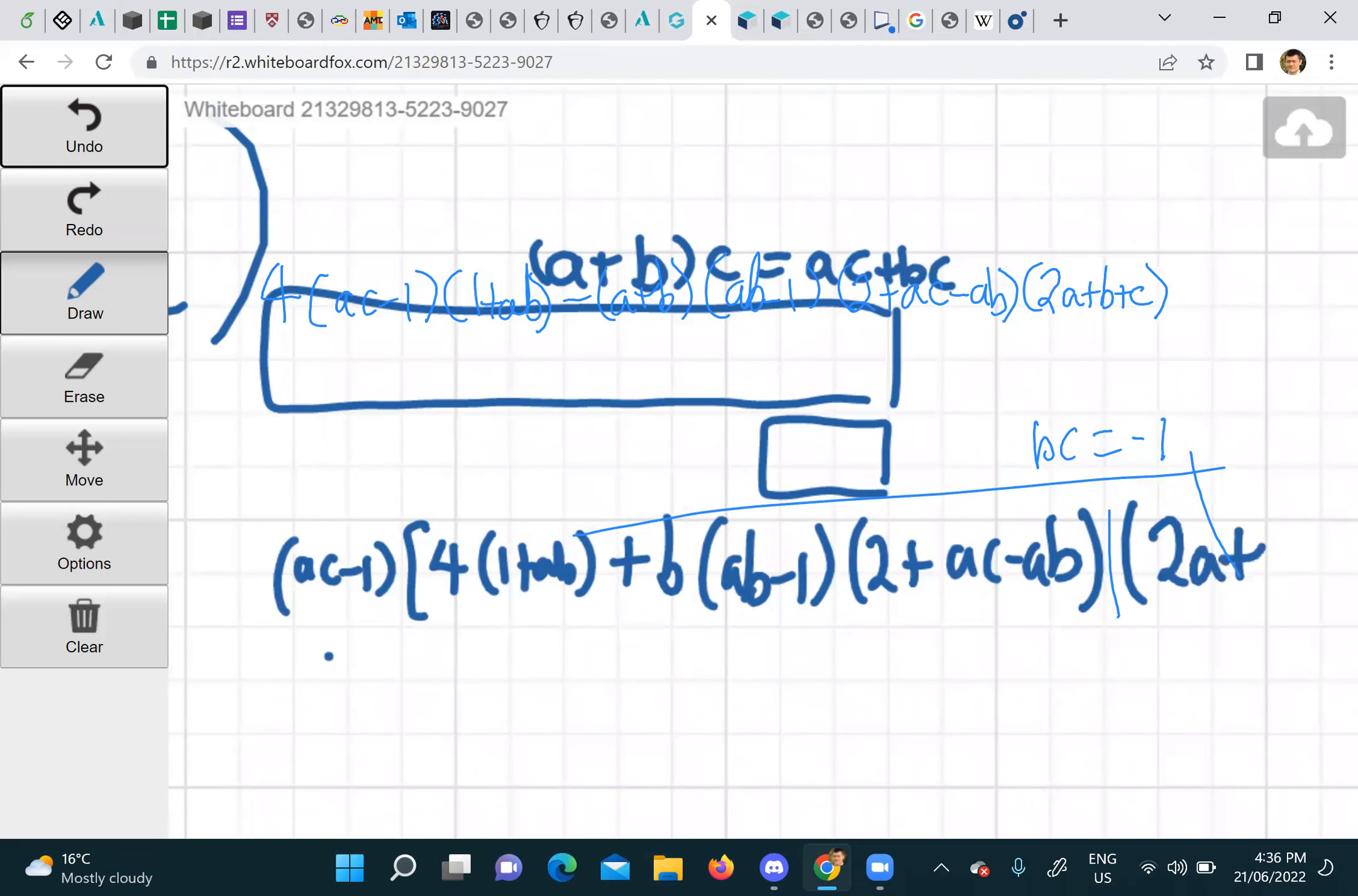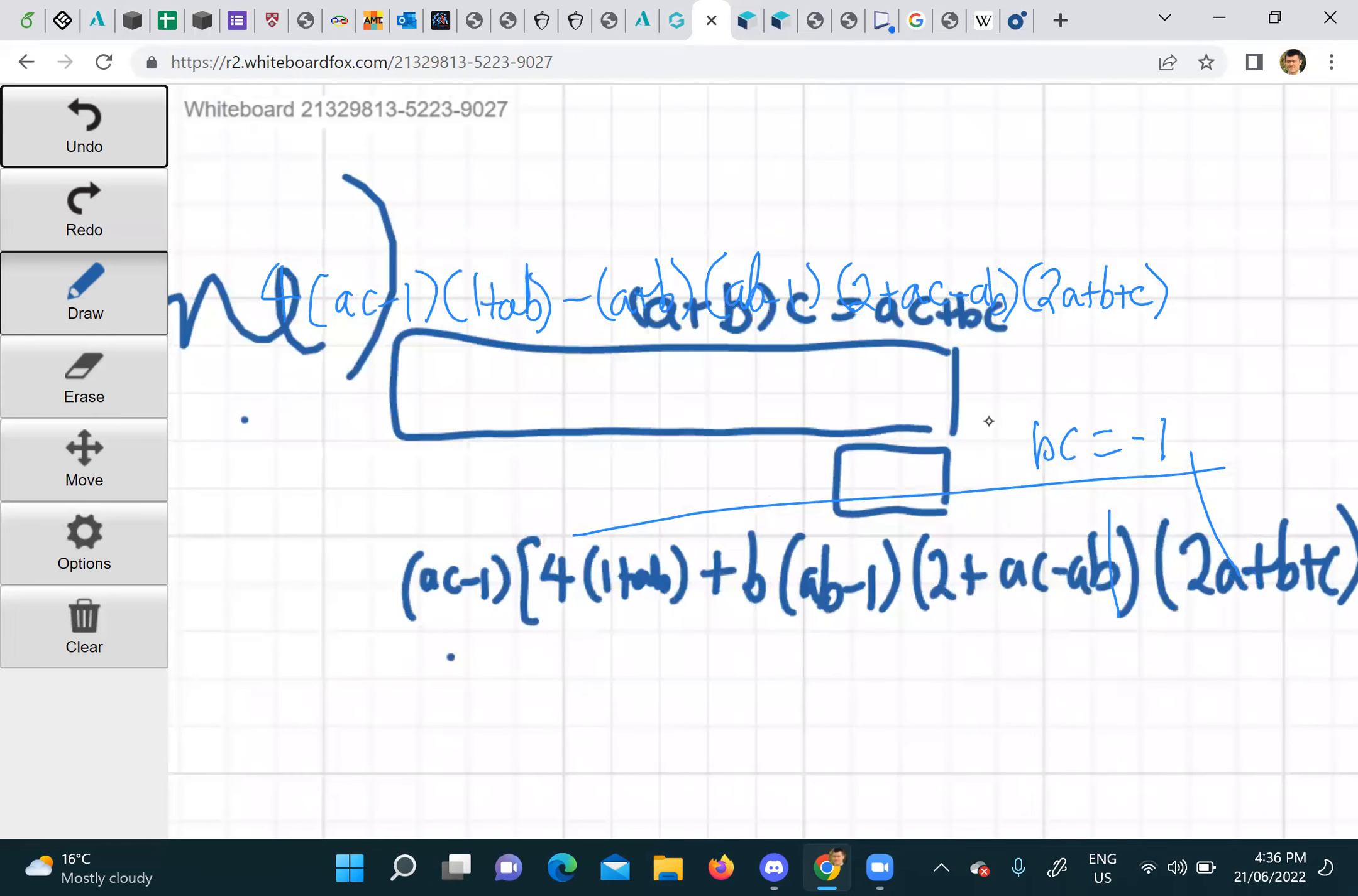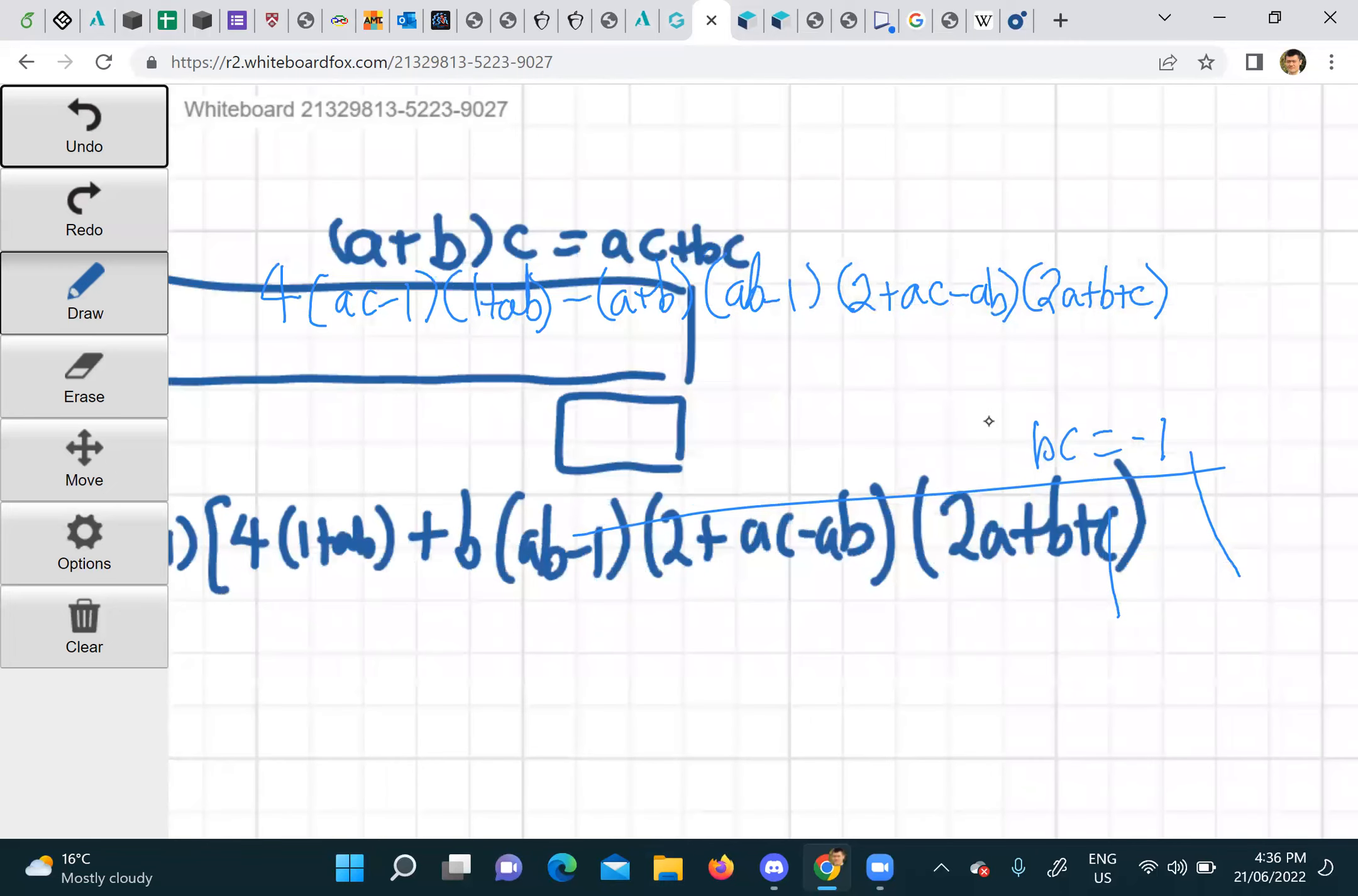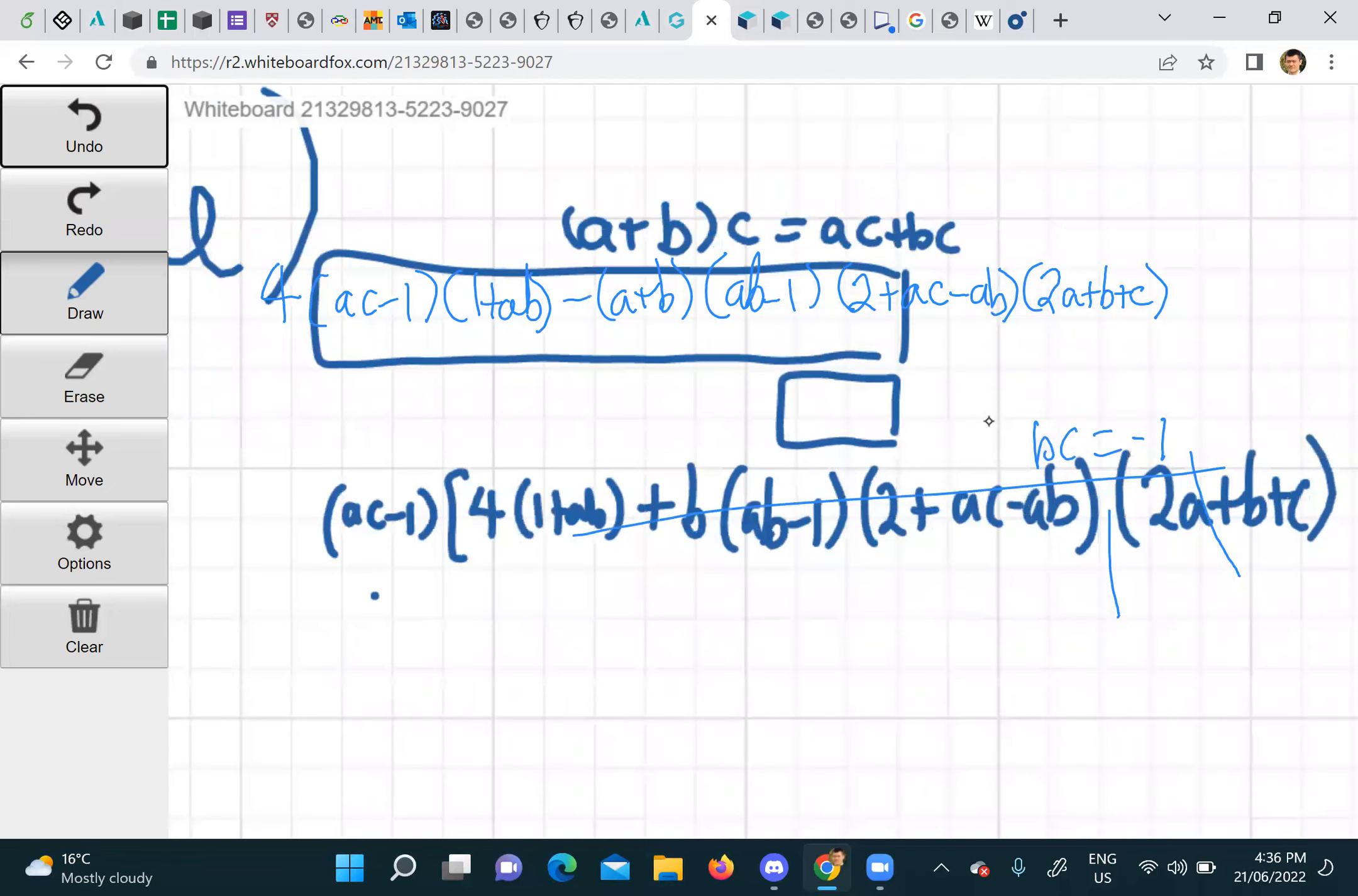2a plus b plus c. Okay, the actual question was just to factor out (ac - 1), but you can keep going to see if this has any more factors. But don't you just expand it and then factor the constant?